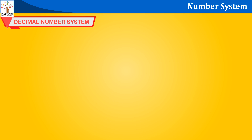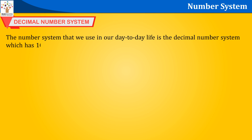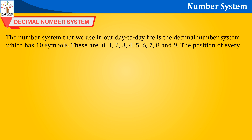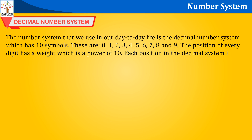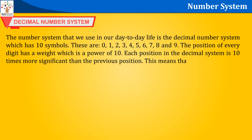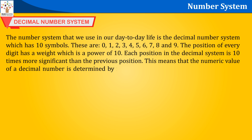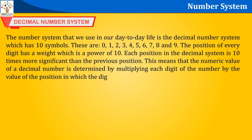The number system that we use in our day-to-day life is the decimal number system, which has 10 symbols: 0, 1, 2, 3, 4, 5, 6, 7, 8, and 9. The position of every digit has a weight which is a power of 10. Each position in the decimal system is 10 times more significant than the previous position. The numeric value of a decimal number is determined by multiplying each digit by the value of its position and then adding the products.